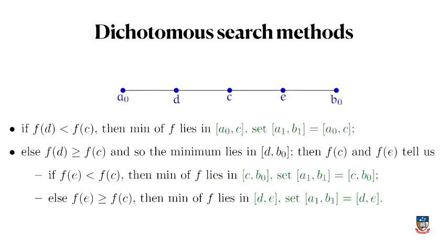Depending on which is the smallest out of f of d, f of c, and f of e, depending on which point is the lowest, that makes the search interval for the minimum be a to c, d to e, or c to b. So you can halve the search interval each time.